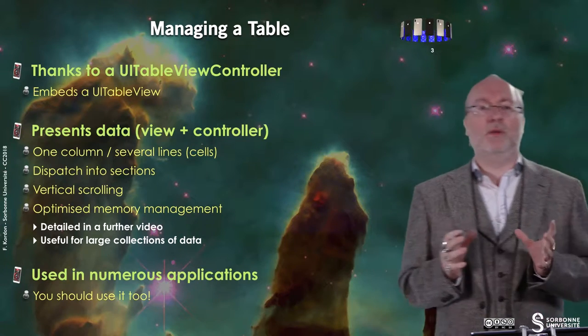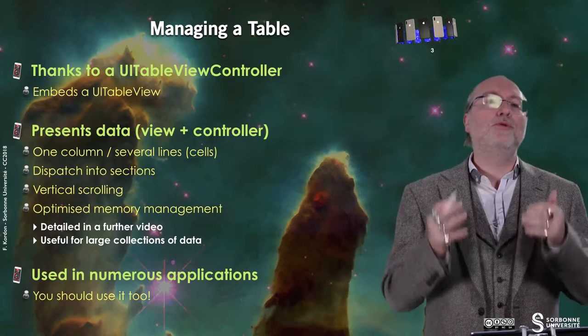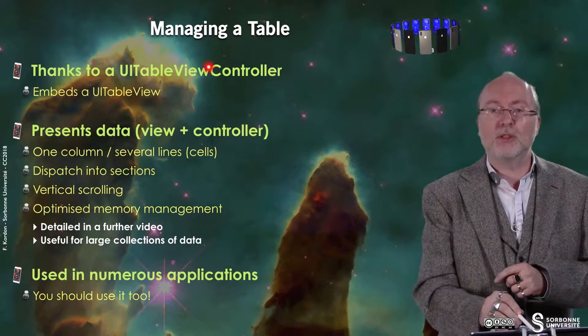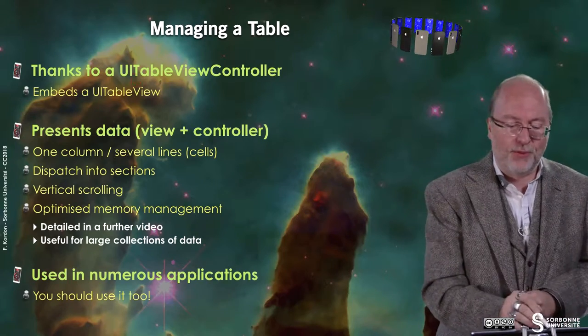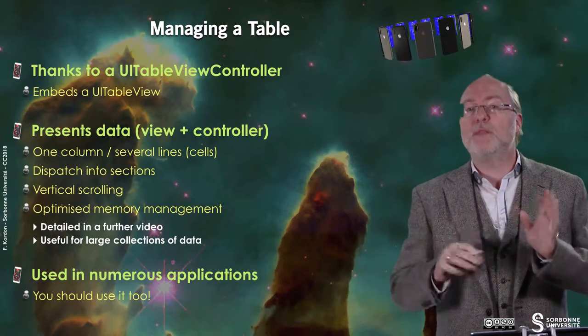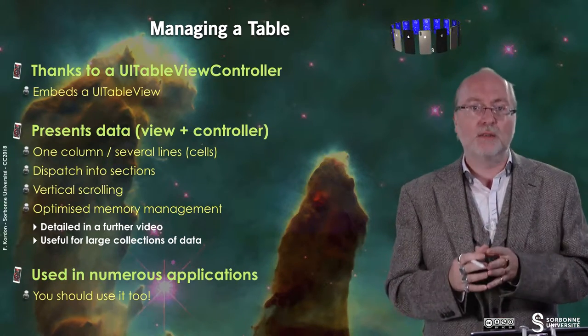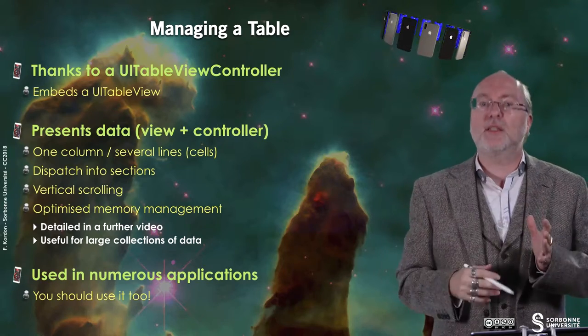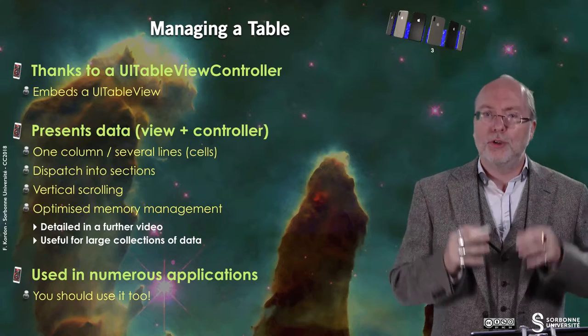The idea is to manage a table, and you manage this table thanks to the UITableViewController that embeds a UITableView. This has the status of a controller, and it embeds something that has the status of a view. You can present data using the view and the controller. You have one column and several lines — each line is called a cell — and cells can be dispatched into sections. You can have as many sections as you want, and vertical scrolling is automatically handled by the UITableViewController.